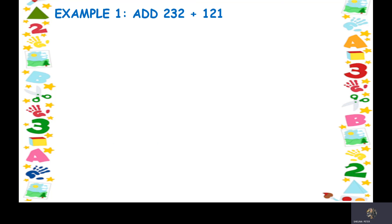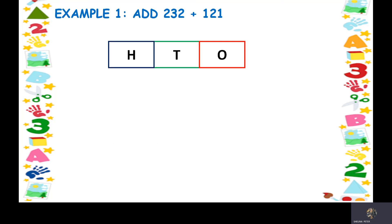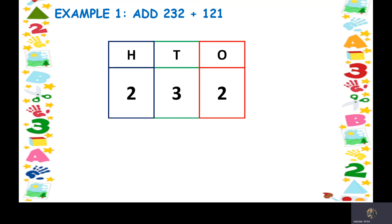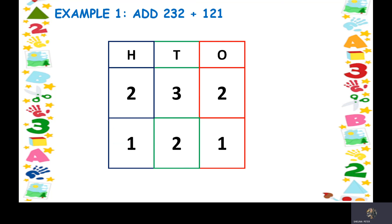Let us take example number one: add 232 and 121. The first step is to arrange the numbers according to their place value — ones, tens, and hundreds. We take the numbers one by one and write them in the boxes. For 232, starting from the ones place, we write 2, then 3, then 2. For the next number, 121, we start from the ones place and write 1, 2, and 1. So the numbers are now arranged according to their place value.